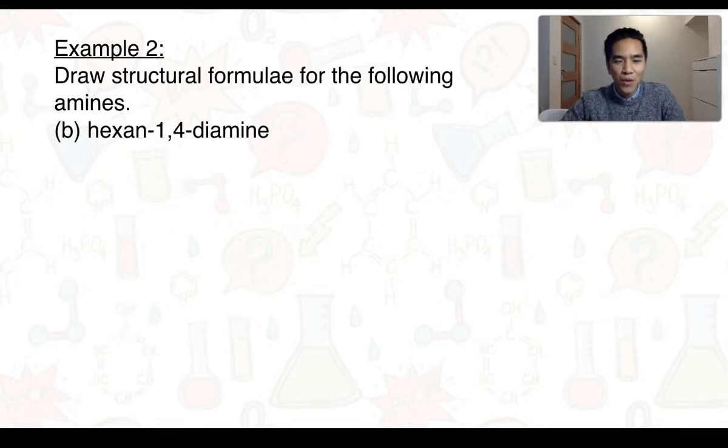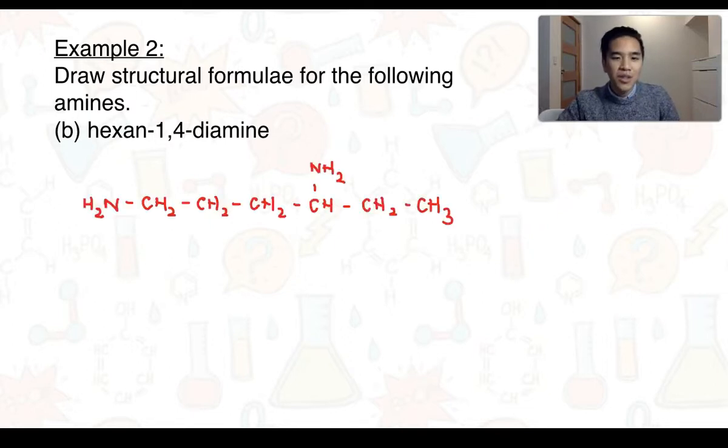This is hexane-1,4-diamine. So this has 2 amino groups, one positioned on carbon 1, one on carbon 4. And hexane indicates that there are 6 carbon atoms in the longest chain. Maybe pause now, have a go, and then compare with my answer. So there we've got the condensed formula. Let's now have a look at the skeletal formula. And there we have the skeletal formula.